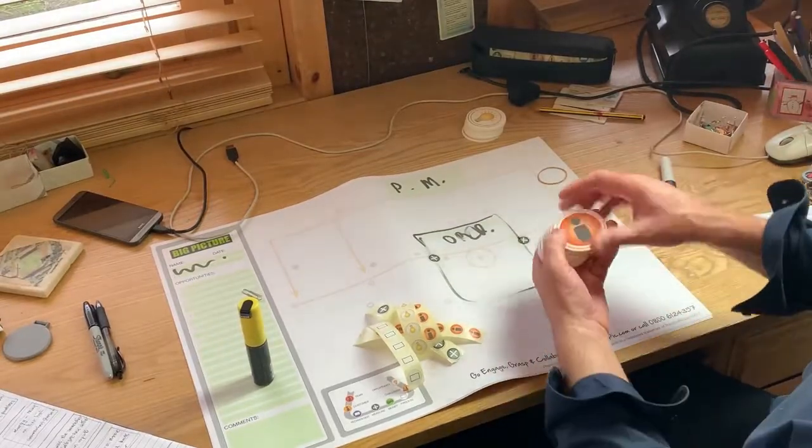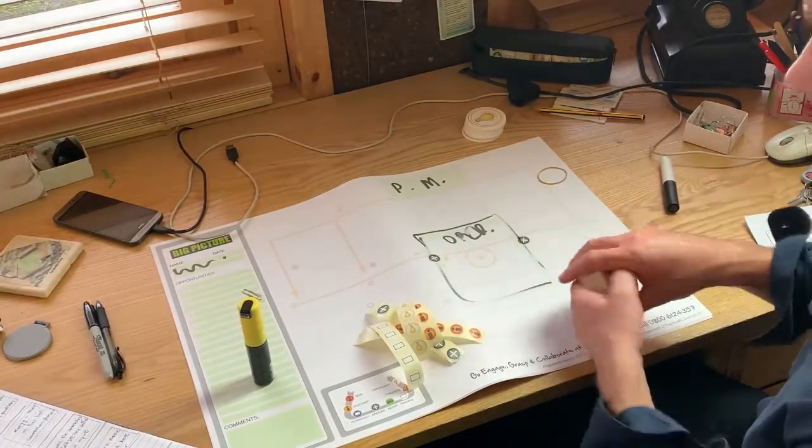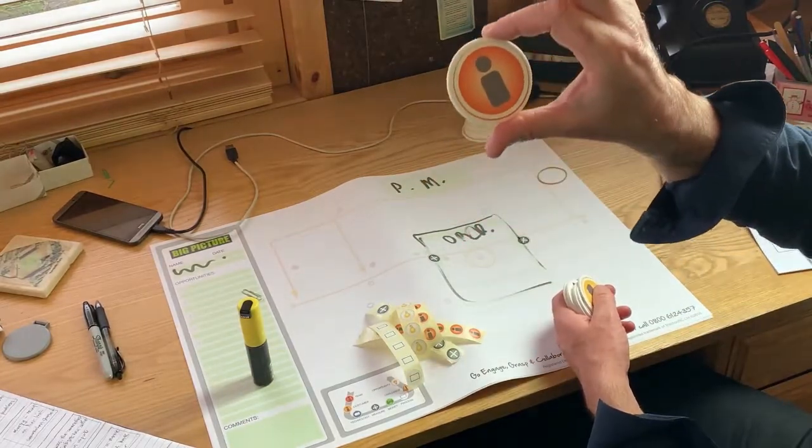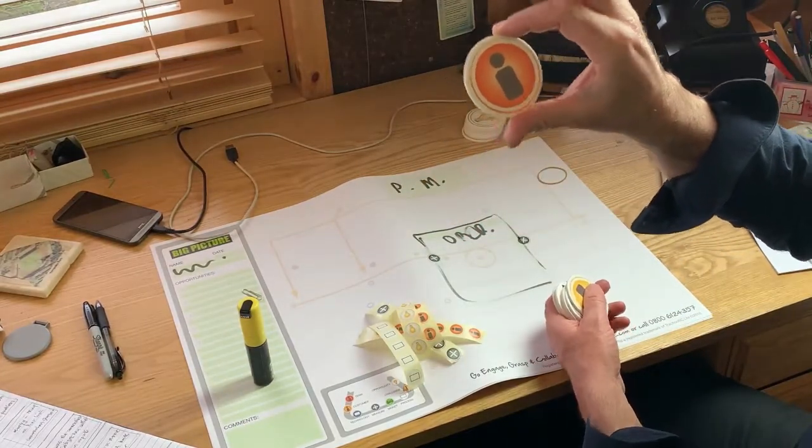In the sample kit, you get a series of these poker chips, one for each of the big picture symbols. This is the team symbol, which represents the people that you work with and some of the key people in the organization.